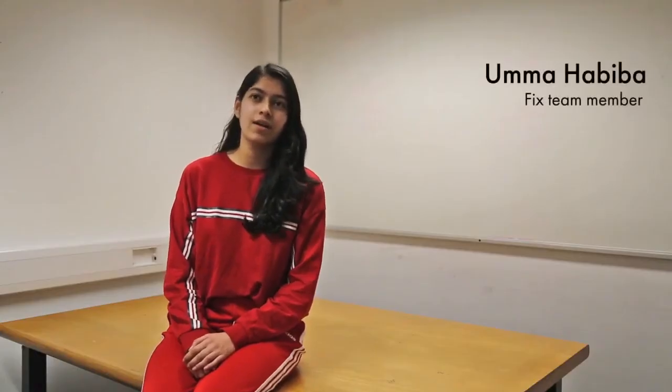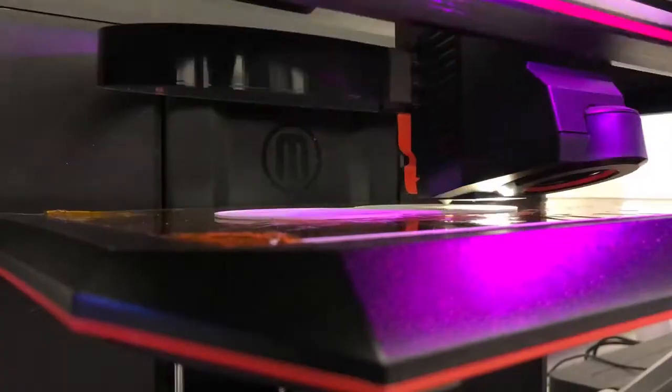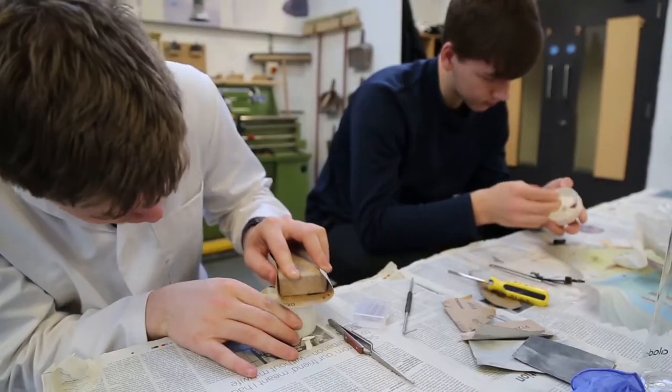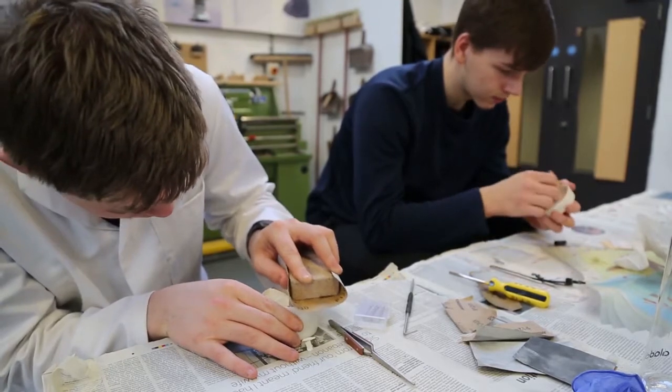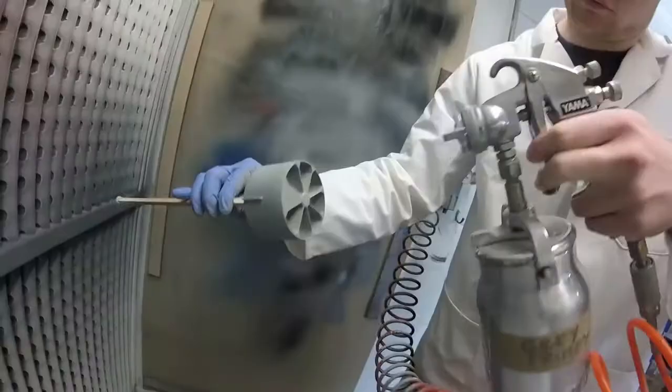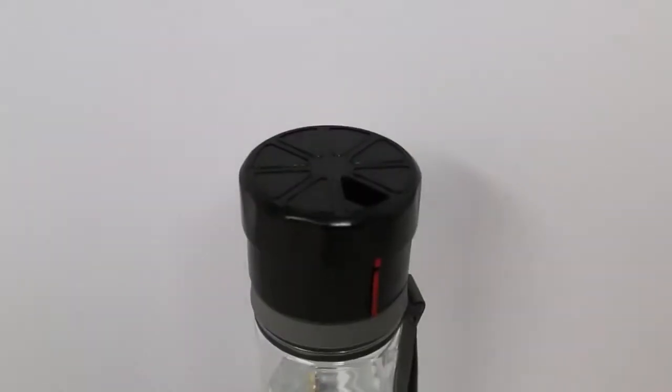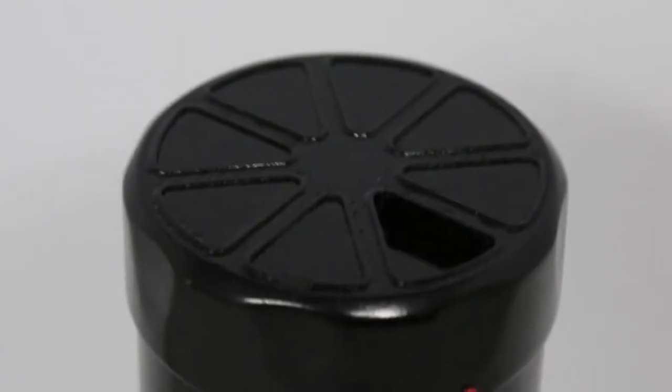So for our final prototype we did 3D printing using an FDM printer. We sanded it down and sprayed it black to match the aesthetic of the bottle. After that we took it to Fausta to reveal the final product to her.